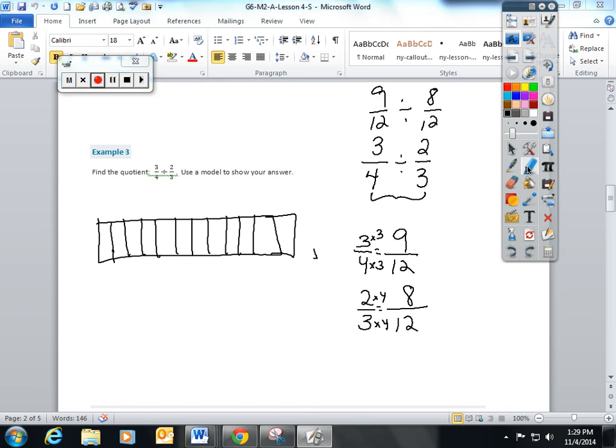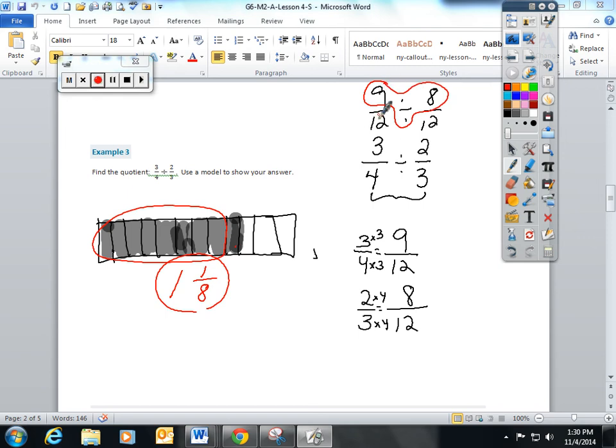And I am going to shade. This is the same as 9 twelfths divided by 8 twelfths. So, I'm going to shade 9 of my boxes. 1, 2, 3, 4, 5, 6, 7, 8, 9. And I'm going to see how many groups of 8 fit equally into 9. It's only one whole group. And there's one piece left over out of the groups of 8 that I'm looking for. So, the answer is 1 and 1 eighth. And again, I'm encouraging my students. Look at the numerators once the denominators are the same. 9 divided by 8. 8 goes into 9 once. And there's one left over out of the 8 you're looking for.